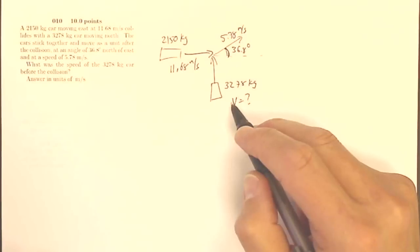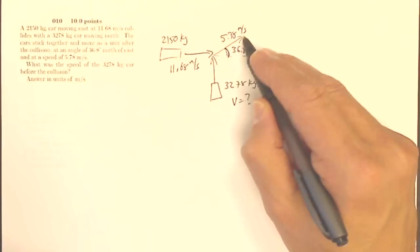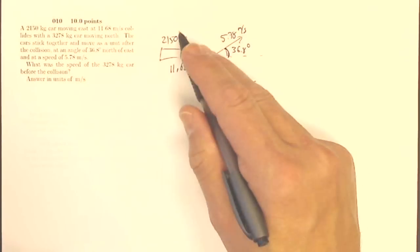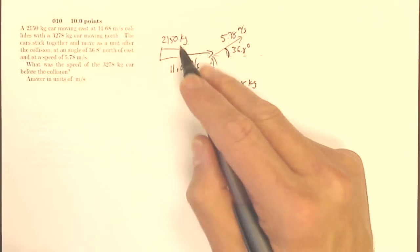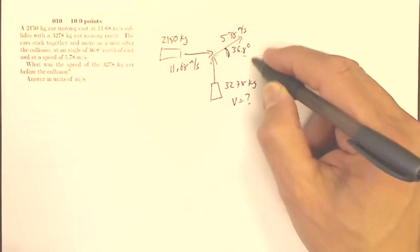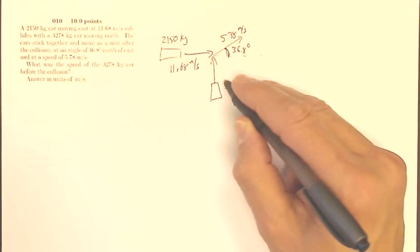So what I've got is this combined wreckage moving up this way at a certain angle, and it has some momentum. That momentum is made up of an X component, which all comes from this car, and a Y component that all comes from this car. All I need is my vertical component of this momentum in order to figure out this velocity, because this is where the momentum comes from.